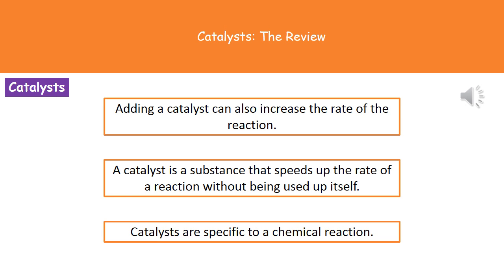One other way that we can actually increase the rate of these chemical reactions is by adding what's called a catalyst. If we actually add a catalyst to the chemical reaction, what we're going to see is an increase in the rate. It won't change how much product we make, but it just makes that product be created faster.